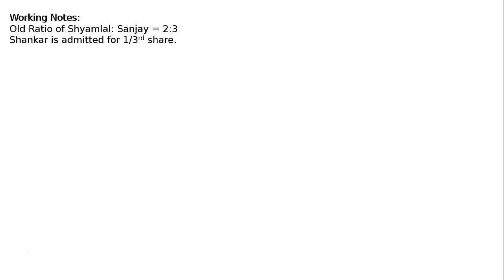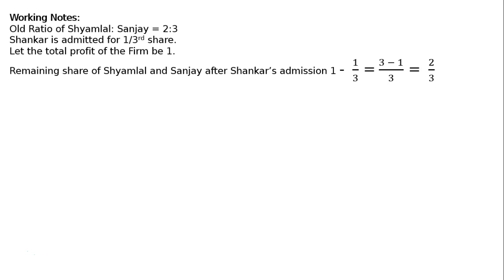Here are the working notes. The old ratio of Samlal to Sanjay is 2:3. Sankar is admitted for one-third share. Let the total profit of the firm be 1. The remaining share of Samlal and Sanjay after Sankar's admission is 1 minus one-third, that is (3−1)/3, which equals 2/3.